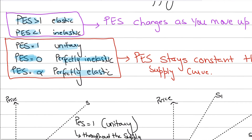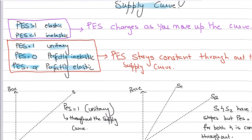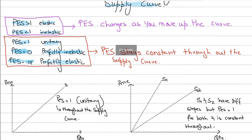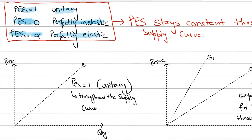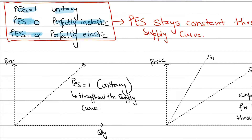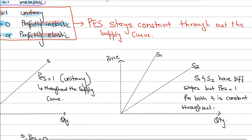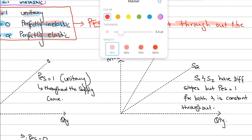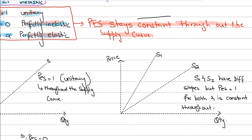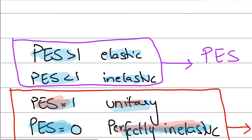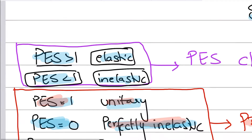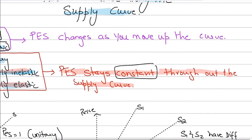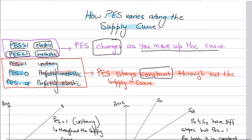I'm not going to run through what perfectly elastic and perfectly inelastic mean, as I'm assuming you're preparing for AS MCQ exams and already know that. What we're discussing now is how PES changes along the supply curve. For the three special cases — PES equals 1, PES equals 0, and PES equals infinity — the PES always stays constant throughout the supply curve. However, when PES is greater than 1 (elastic) or less than 1 (inelastic), the PES changes as you move up the curve.